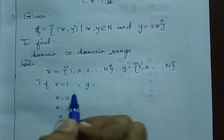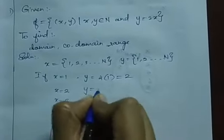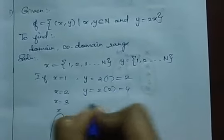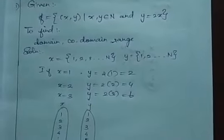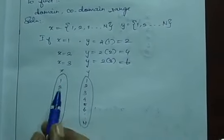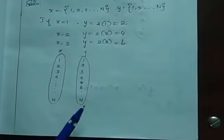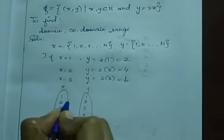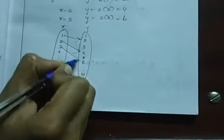If x = 1, then y = 2×1 = 2. If x = 2, then y = 2×2 = 4. If x = 3, then y = 2×3 = 6. We can't write all numbers, so I'm taking up to 3. To find whether it is a function, we use an arrow diagram. The first set has 1, 2, 3, etc. from N, and the second set also has 1, 2, 3, etc. from N. Mapping: 1→2, 2→4, 3→6.